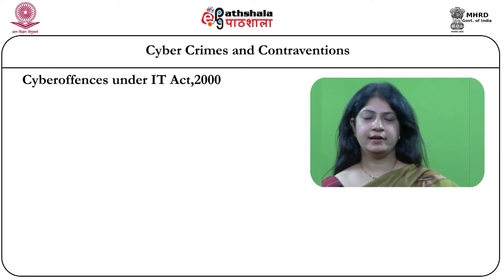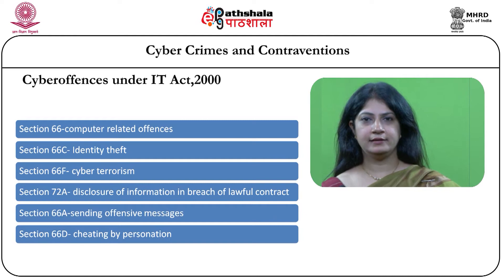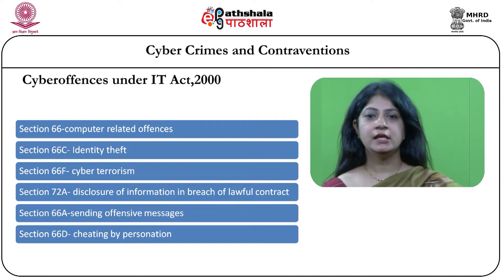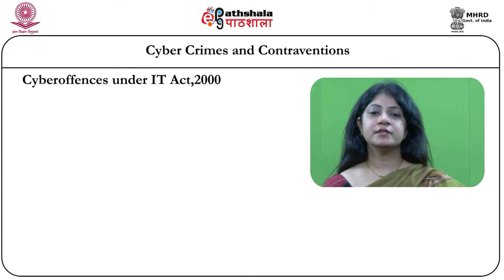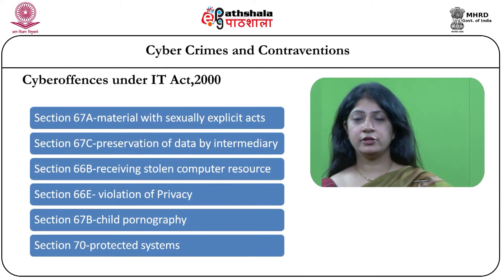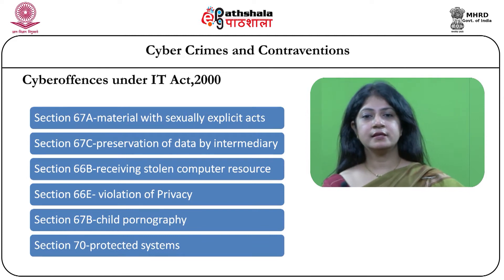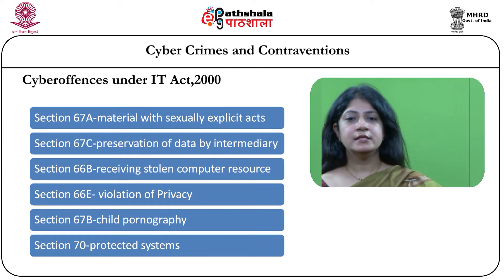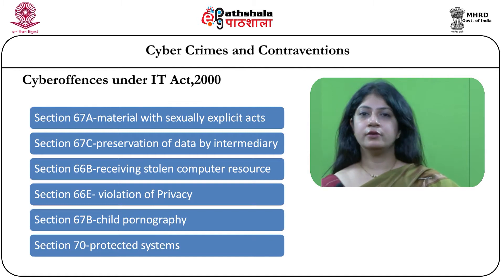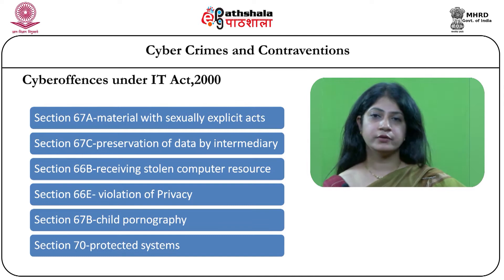We also have other sections under the IT act: section 66C deals with identity theft; 66F deals with cyber terrorism; section 72 deals with breach of confidentiality and privacy; 66A particularly talks about hate speech and offensive or menacing speech including spamming; 66C and D deal with cheating by personation and identity theft. Section 67 and 67A deal with sexually explicit content or pornography, 67B deals with child pornography, 66E deals with violation of privacy, and 66B deals with stolen computer resources and data including hardware.